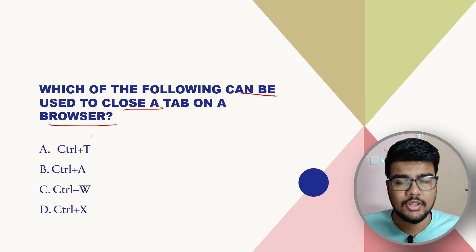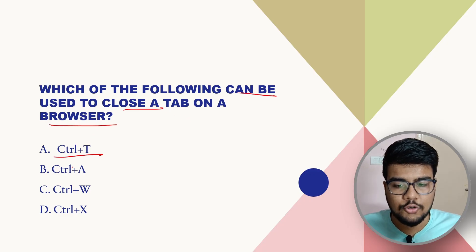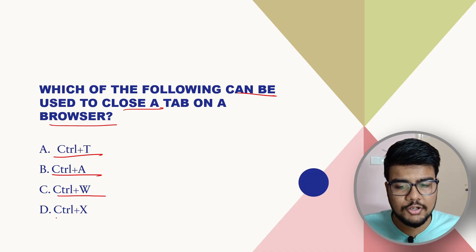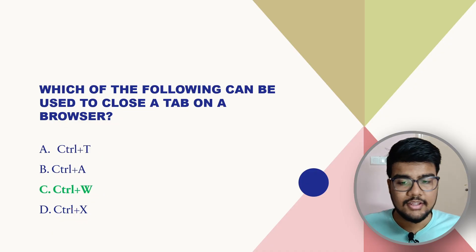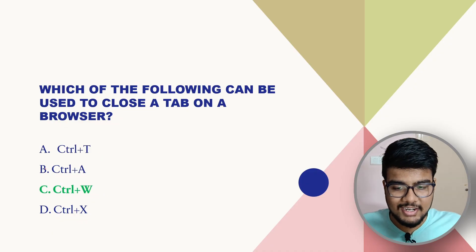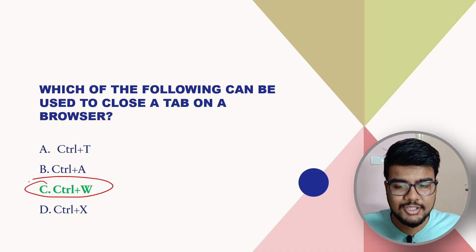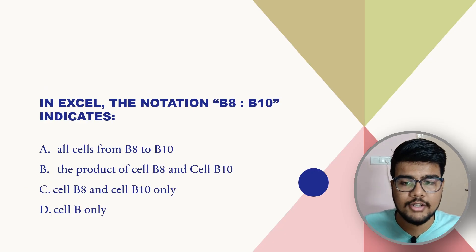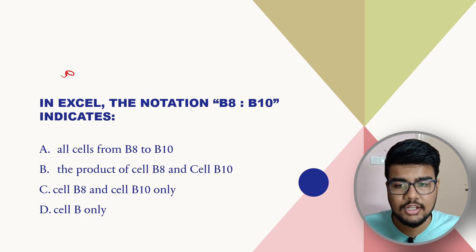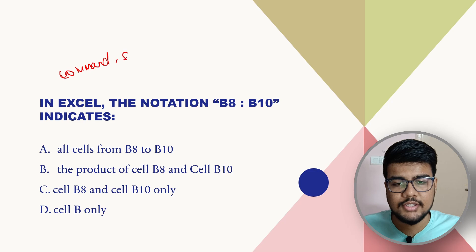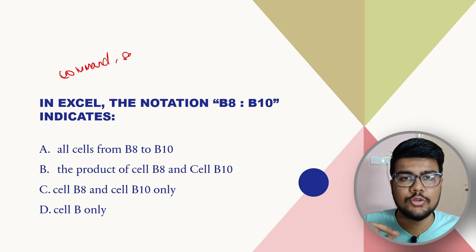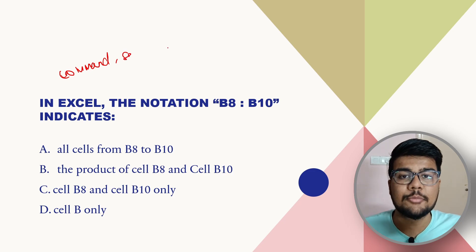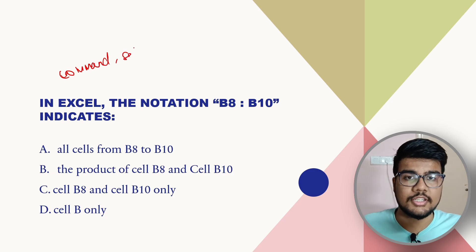Which of the following can be used to close a tab on a browser? The options are Ctrl+T, Ctrl+A, Ctrl+W, and Ctrl+X. The answer is Ctrl+W. Make a note of all the commands, because commands and assertion-type questions were mostly repeated in the exam.